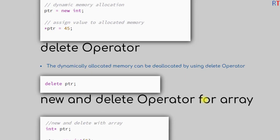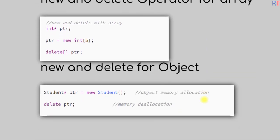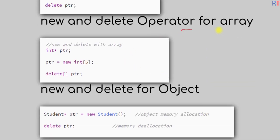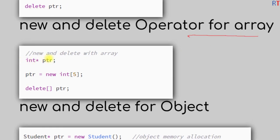The new and delete operators can also be used for arrays. The syntax is: create an integer pointer ptr, then use the new keyword followed by the size of the array. The new keyword dynamically allocates memory for the array and returns an address stored in ptr. We then use the delete keyword to free that memory.